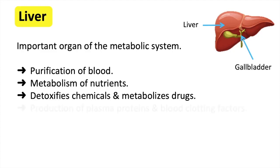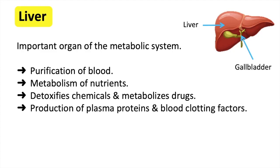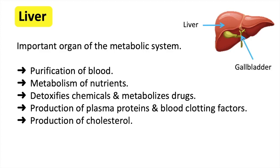The liver produces plasma proteins and blood clotting factors. These clotting factors prevent the body from losing too much blood. The liver also produces cholesterol, which is important for cell structure. It also produces hormones, vitamin D, and other substances.